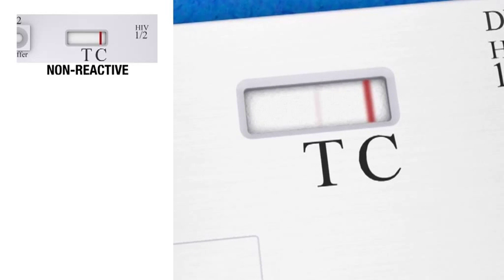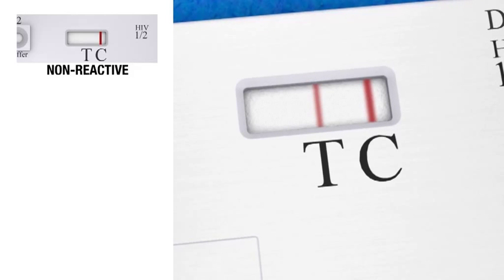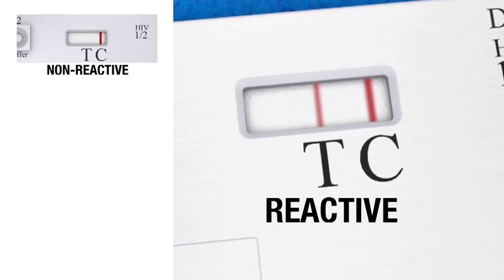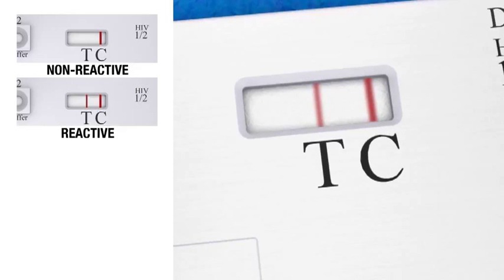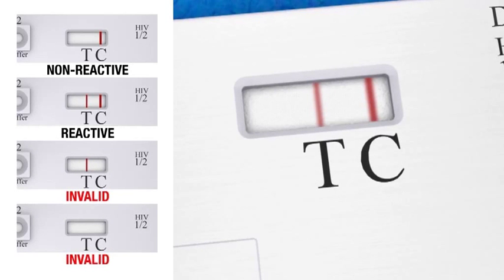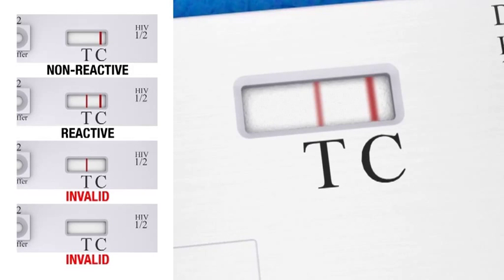If a reddish line is visible above the T marking and a line is visible above the C marking in the test window, then the result is reactive, meaning that the patient is preliminarily positive for HIV-1 and or HIV-2 antibodies. The results must then be confirmed by a more accurate method.